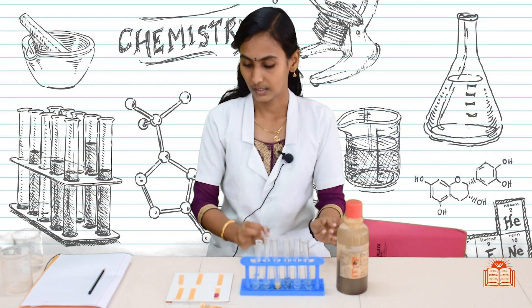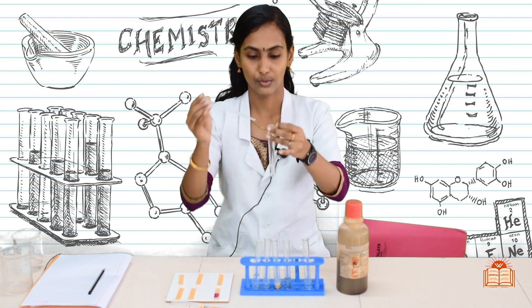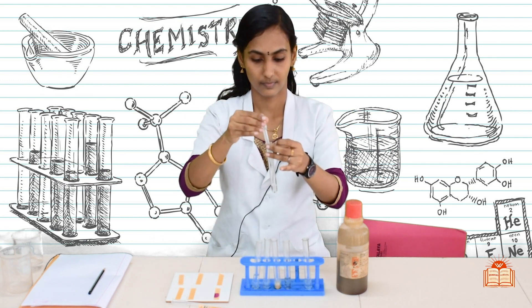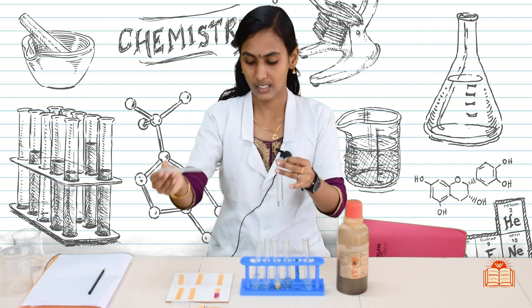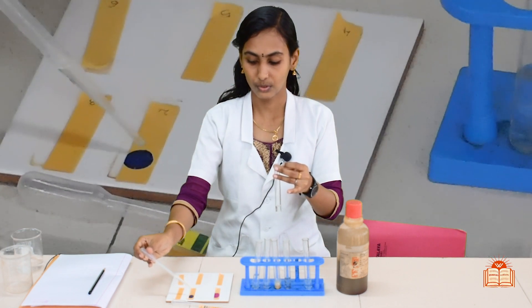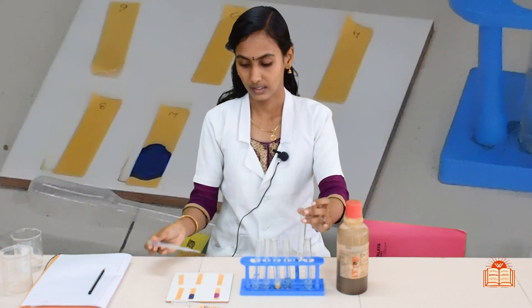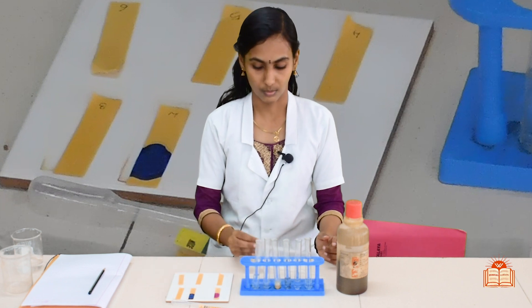Next one is dilute NaOH solution. Take some drops of dilute NaOH solution and add those drops to the pH paper. What is the color that you observed? It is dark blue color.